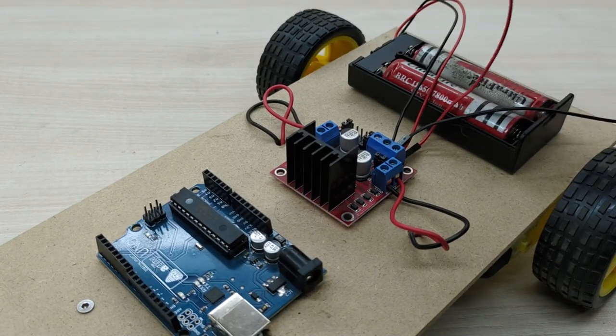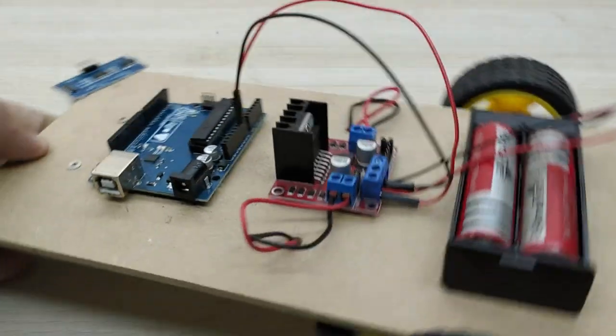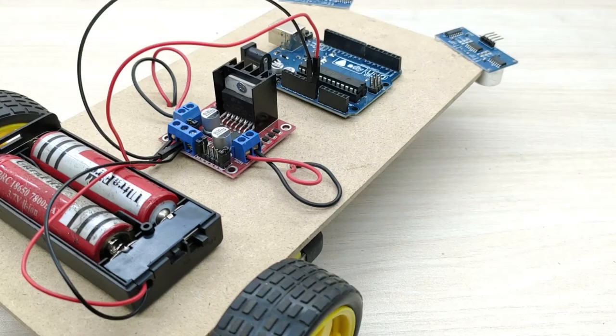Now, connect the jumper wire connected to the positive battery terminal to Vin pin of the Arduino board. Connect the other jumper wire to ground pin of the Arduino board.